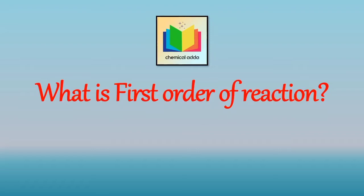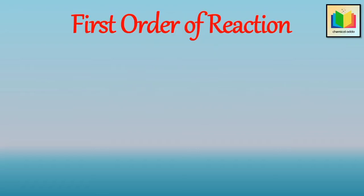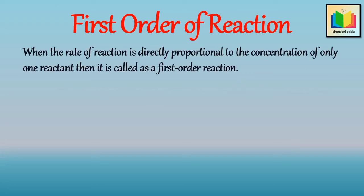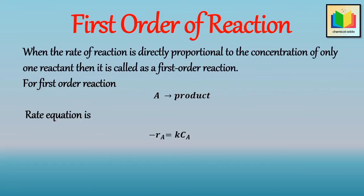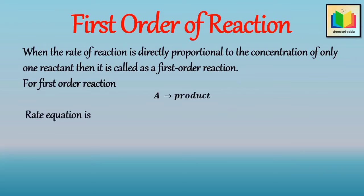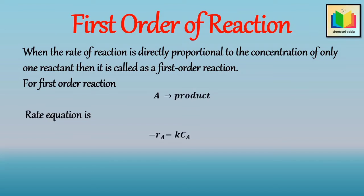What is meant by first order reaction? When the rate of reaction is directly proportional to the concentration of only one reactant, then it is called a first order reaction. For example, if the first order reaction is A gives product, then the rate of disappearance of A is given by the rate equation: minus R_A is equal to K·C_A, where minus R_A is the rate of reaction, K is the specific reaction rate constant, and C_A is the concentration of the reactant.